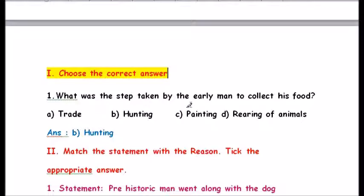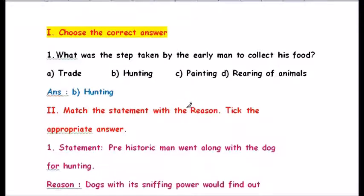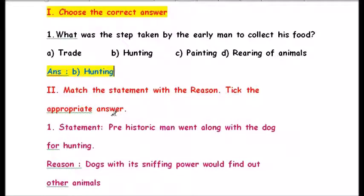Let us do the evaluation. Roman number one — choose the correct answer. Question number one: what was the step taken by the early man to collect his food? The options are: a) trade, b) hunting, c) painting, d) rearing of animals. The answer is b) hunting. Hunting was the step taken by the early man to collect his food.